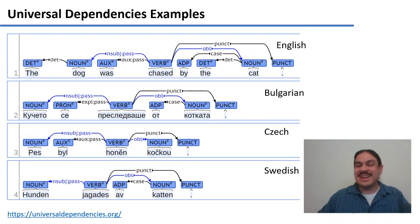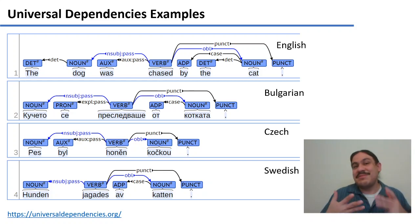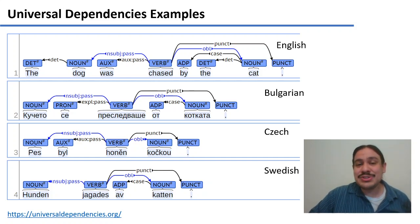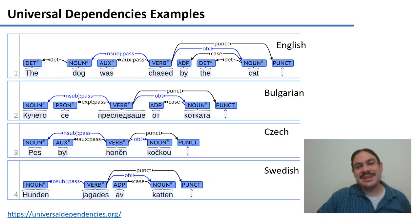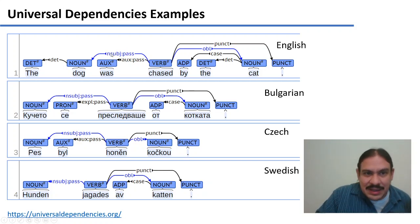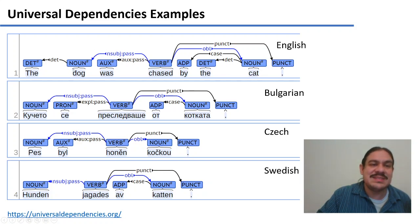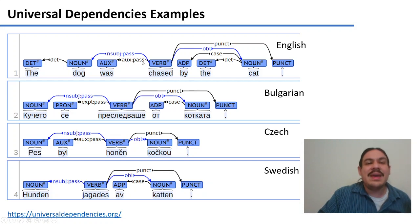That is essentially how you make these — it's expensive, time-consuming, and does involve humans — but eventually you accumulate a dataset and can do really cool things like produce dependency parsings in English, Bulgarian, Czech, and Swedish. The Universal Dependencies website has the standards for label names, and people try to use the same names across different languages. For example, the subject of a passive sentence — 'the dog was chased by the cat' — is labeled the same way whether it's 'dog' in English, 'kucheto' in Bulgarian, 'pes' in Czech, or 'hunden' in Swedish.